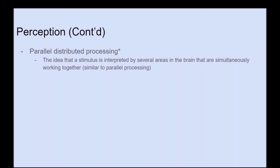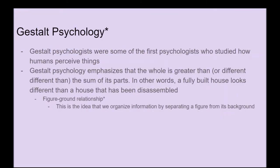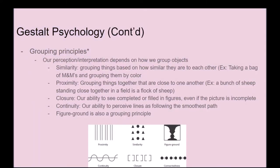Parallel distributed processing is the idea that a stimulus is interpreted by several areas in the brain simultaneously working together. Gestalt psychology was among the first to study how humans perceive things. Gestalt psychology emphasizes that the whole is greater than — or different from — the sum of its parts; a fully built house looks different from a disassembled one. An important concept in gestalt psychology is the figure-ground relationship: the idea that we organize information by separating a figure from its background. Grouping principles are also very important — the idea that our perception depends on how we group objects.